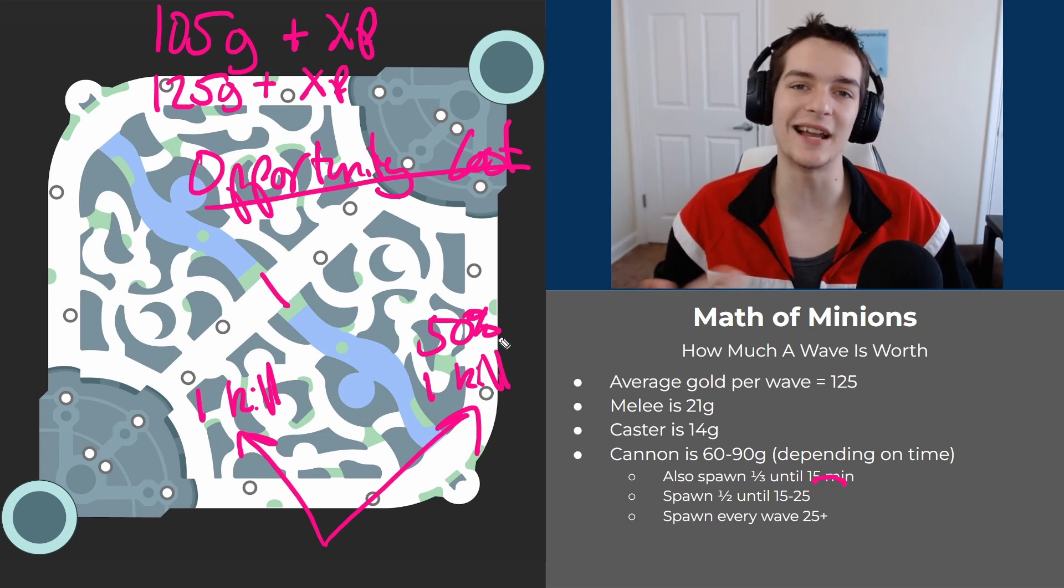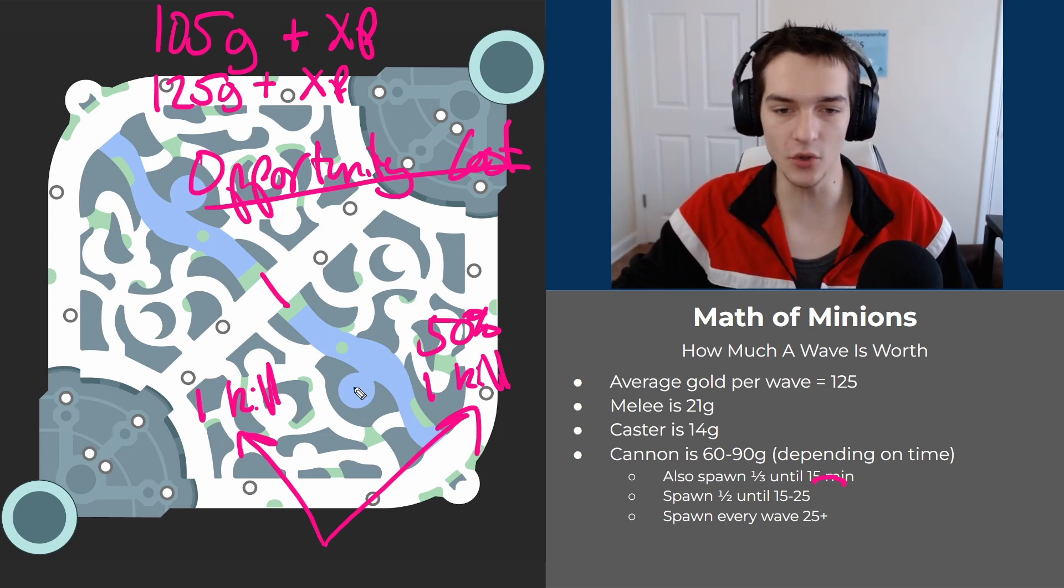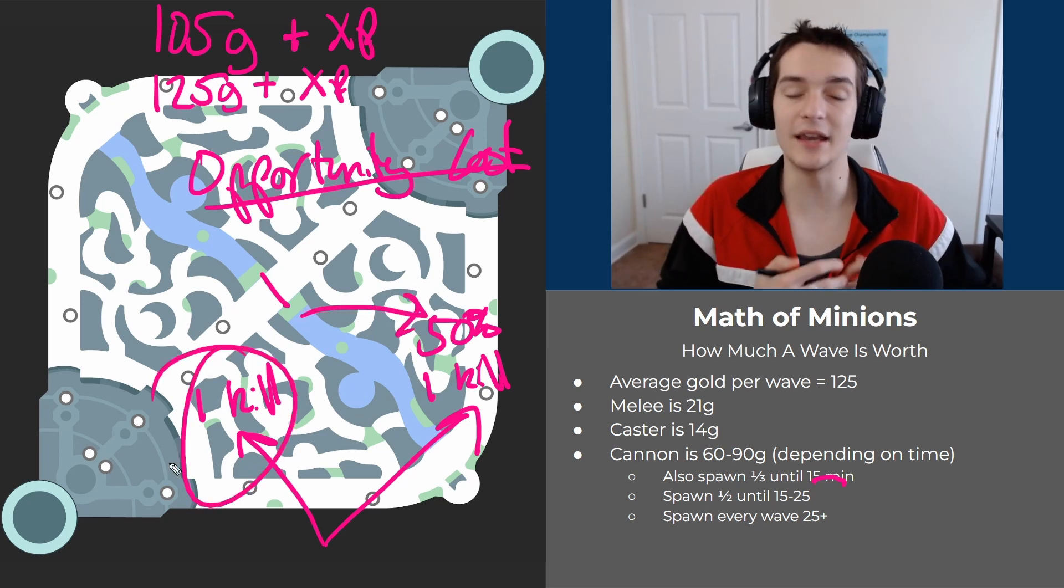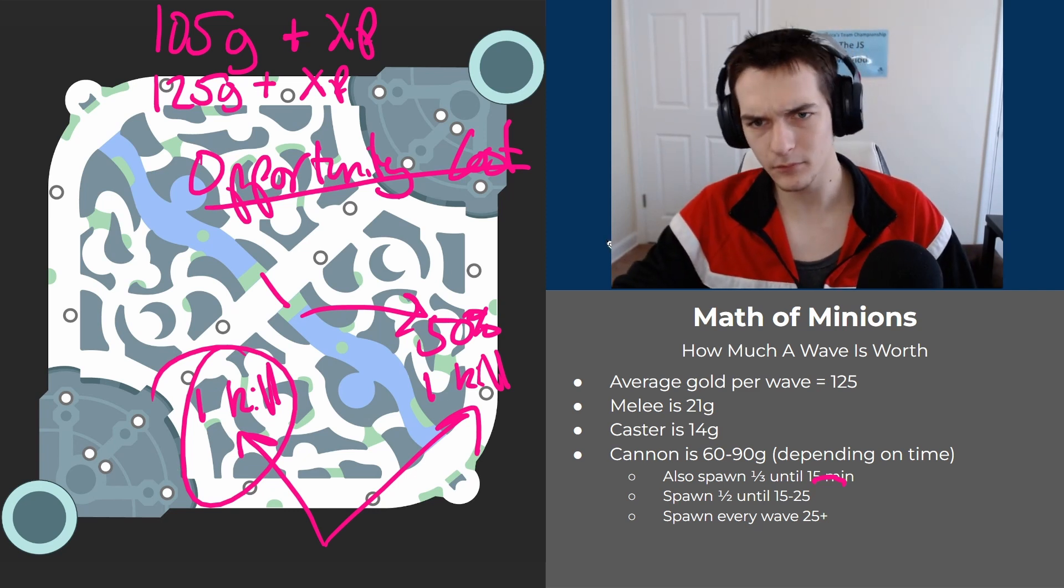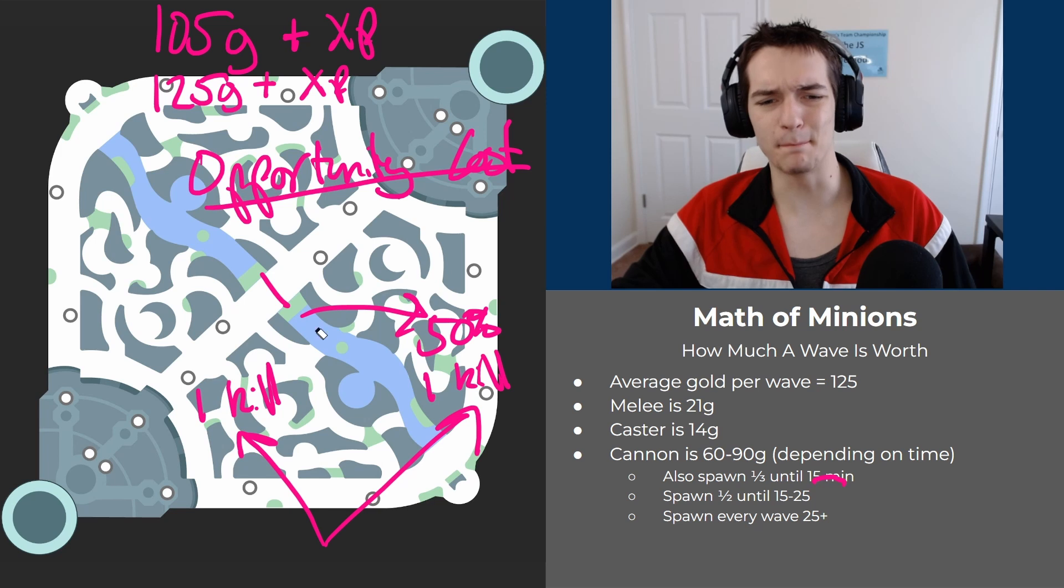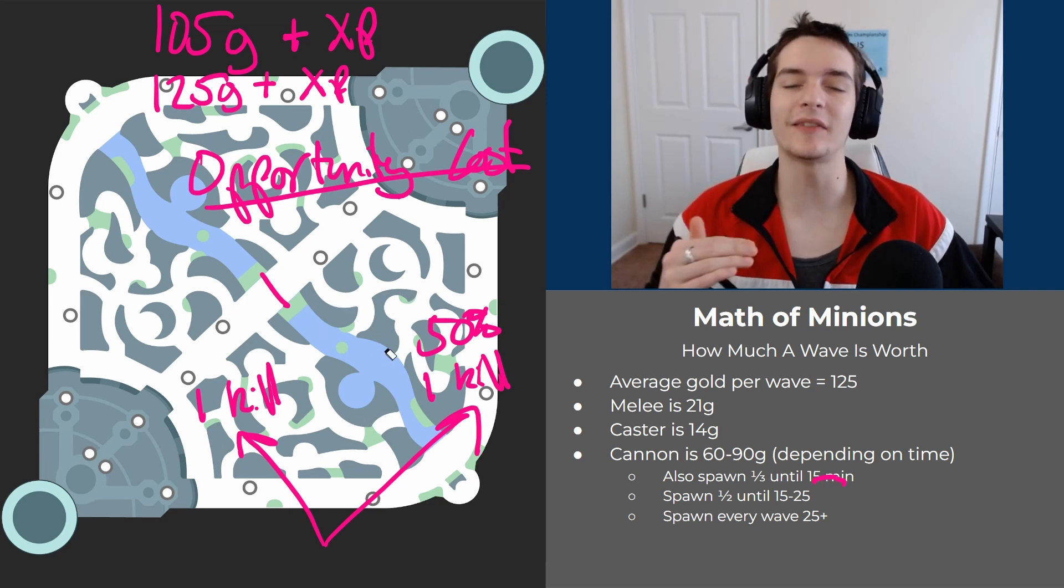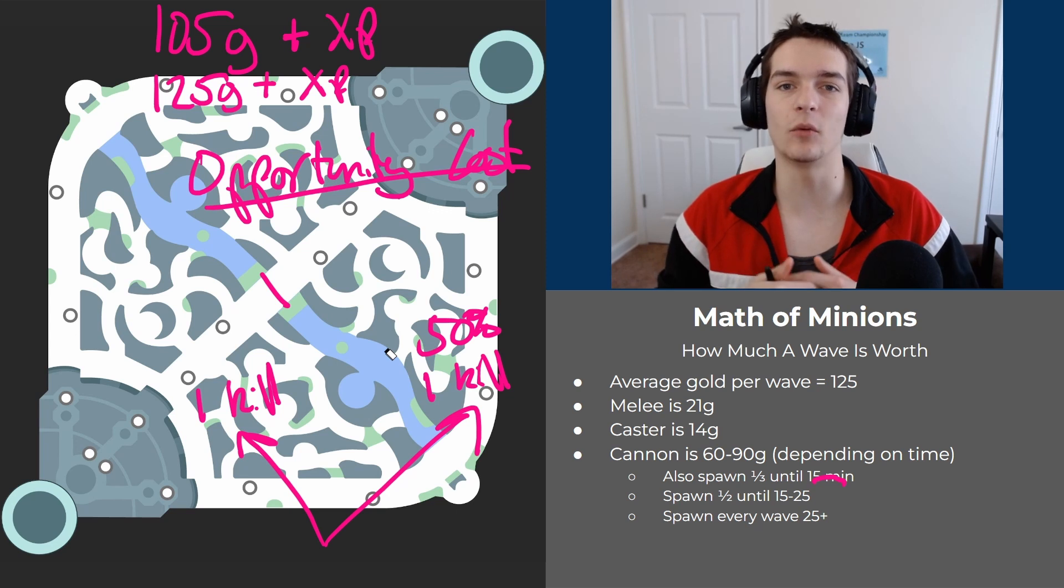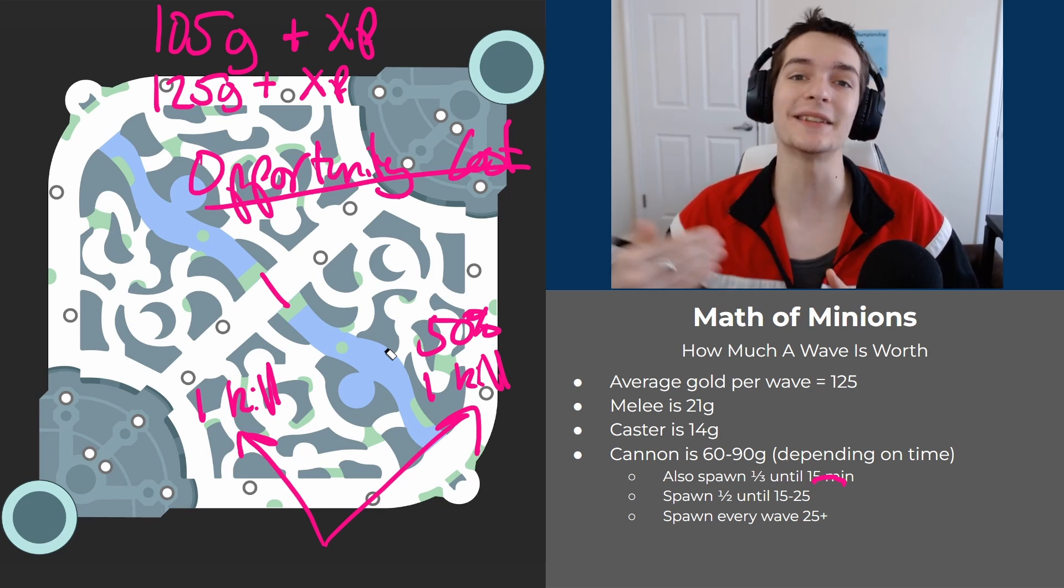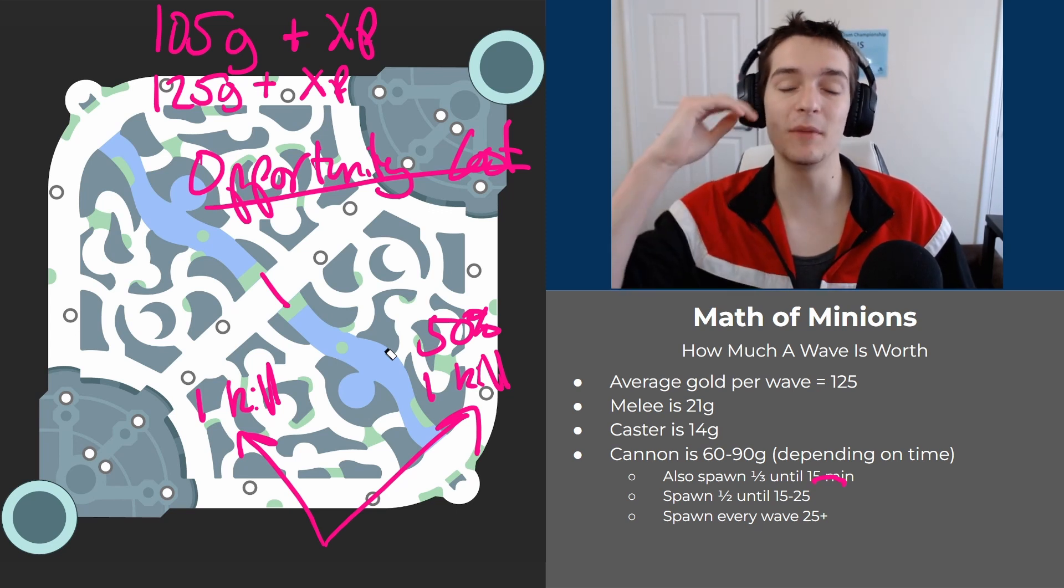This is one of the most common mistakes I see in my coaching - going to coin flip a kill bottom but losing the wave, and now we're losing and we just threw a perfectly winnable game. This is one of the most important game fundamentals. It's super important to get this when you're a beginner. These minion waves are so incredibly valuable.